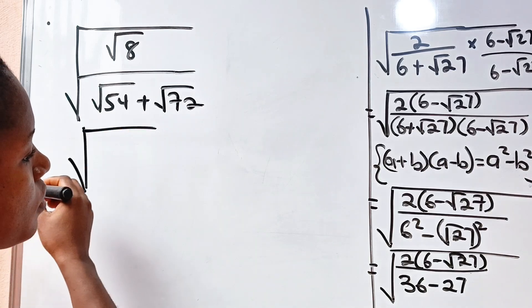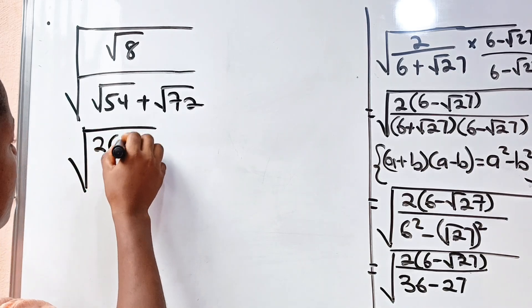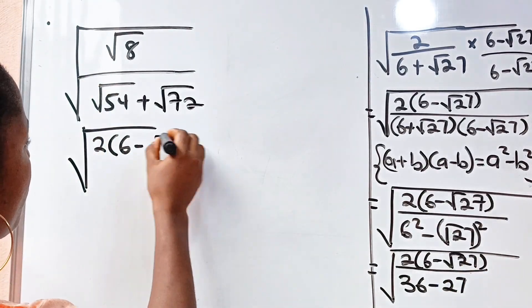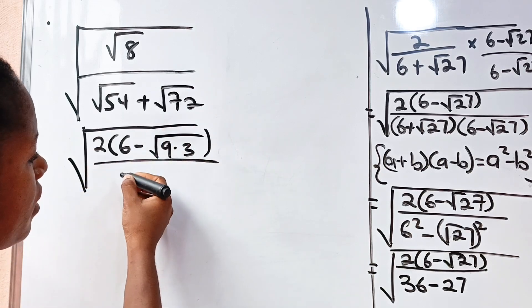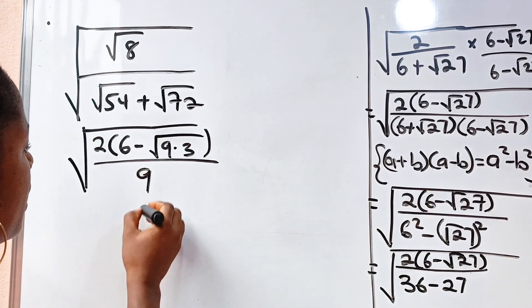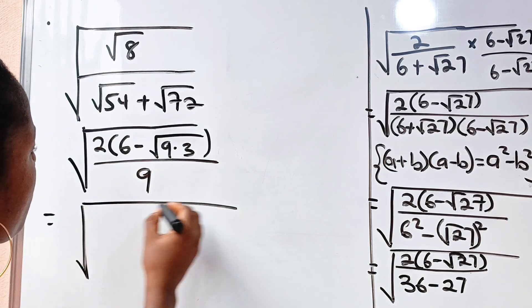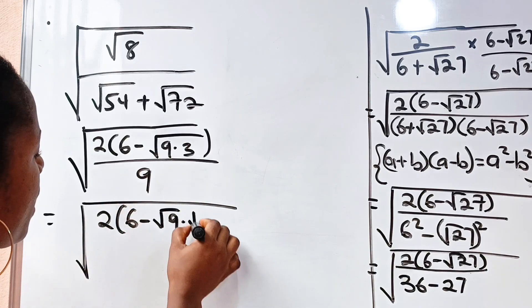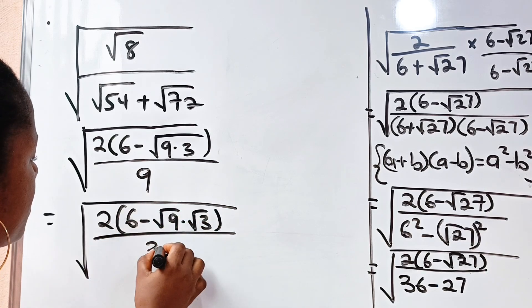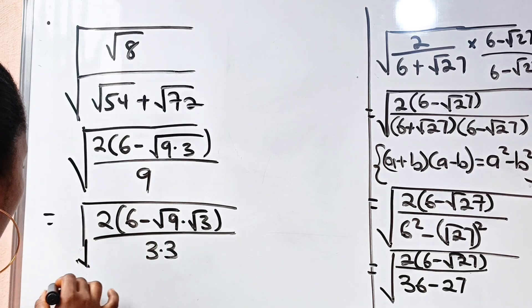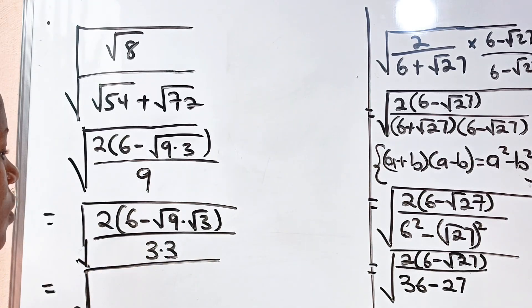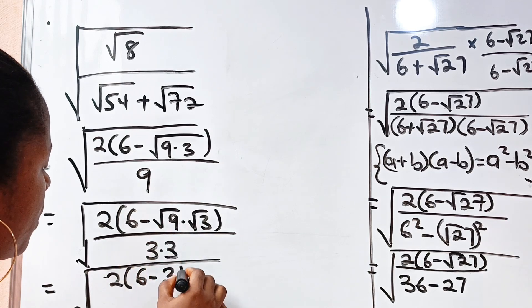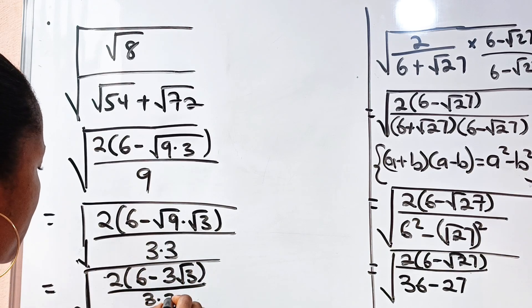Now this can be written as the square root of 2 bracket 6 minus — now root 27 can be expressed as root 9 multiplied by 3. Divided by 36 minus 27 which gives us 9. So this is equal to the square root of 2 bracket 6 minus root 9 multiplied by root 3, divided by — and 9 is the same as 3 multiplied by 3.